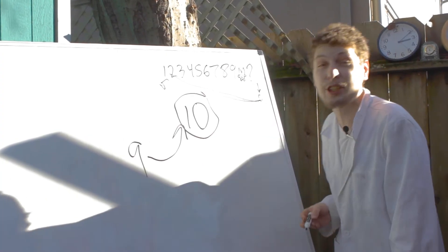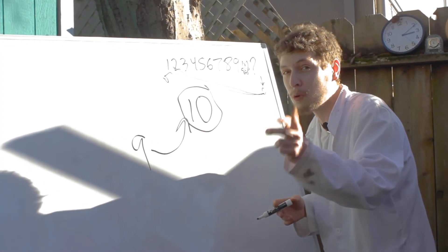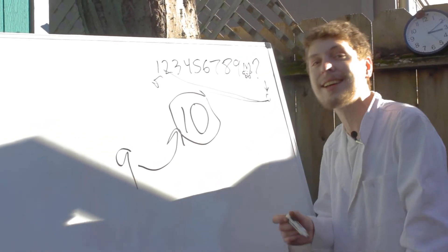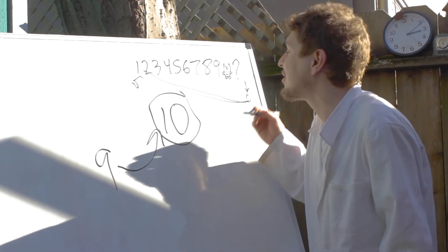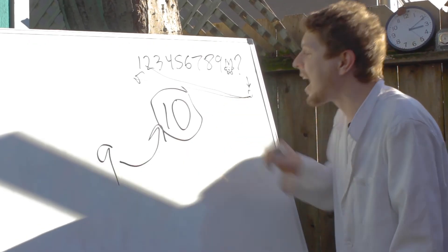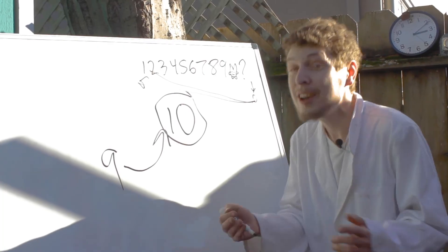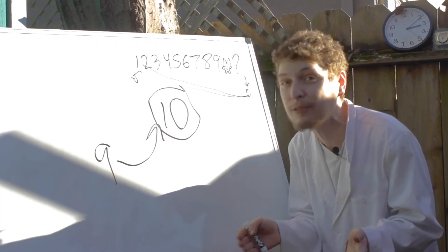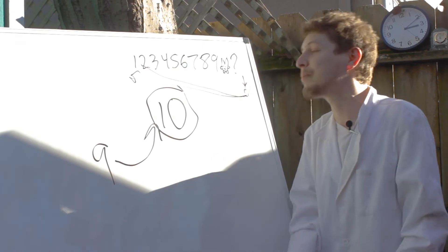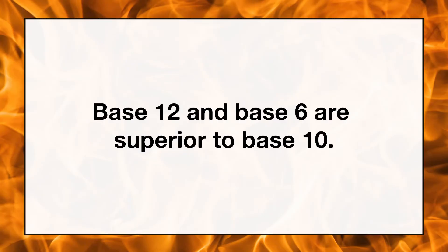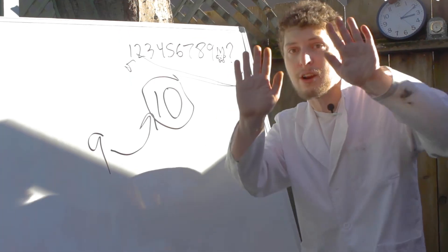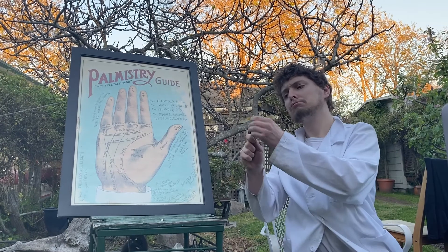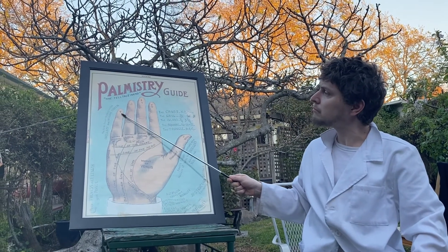In fact, you know, just got to say real quickly, I'll save a later episode for this, but base 10 kind of sucks. 10 is not that divisible. We don't want to divide things into fives as often as we want to divide things into threes. We would be a lot better off if we were counting in something like base 12 or even six. So I'll rant about that another day.